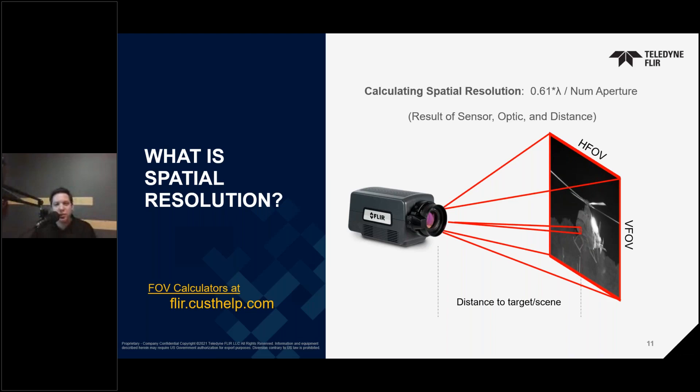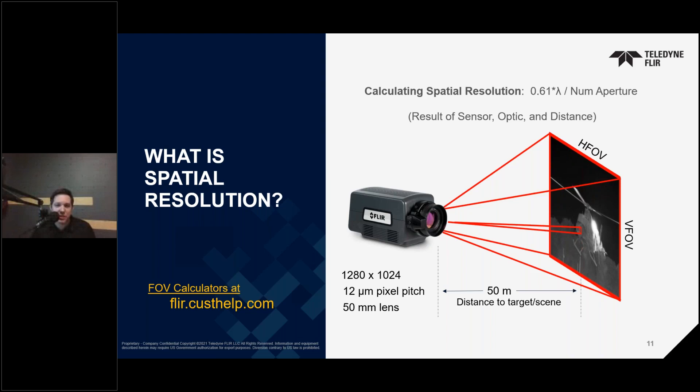Here's an example. We have the 8580 HD mid-wave IR camera with a 12 micron pixel pitch and a 50 millimeter lens. At a distance of 50 meters between the camera and the helicopter, the resulting field of view is roughly 15 by 12 meters, and each pixel spot size or IFOV is 12 millimeters square. Pretty good — but is it good enough? Well, it depends on the size of the area you actually want to view or measure. This is really why there are different lens options: to either get closer or apply a narrower angle telephoto lens to improve spatial resolution at that distance.